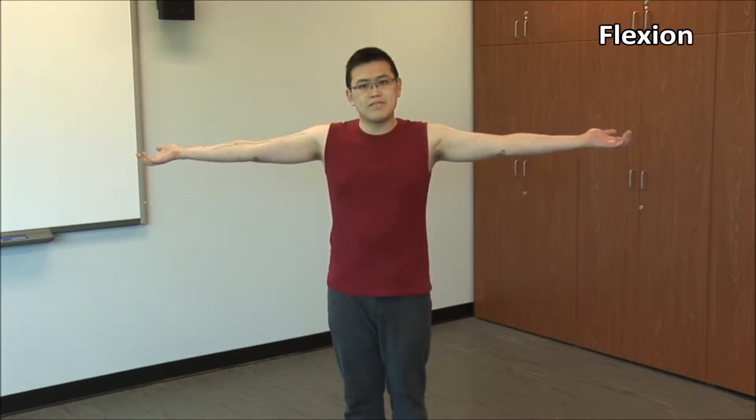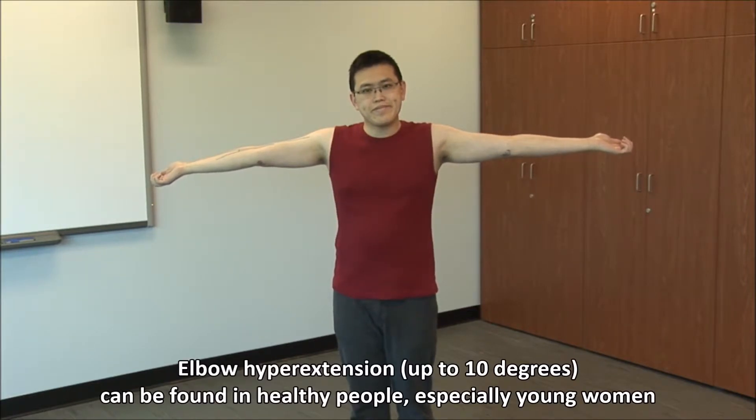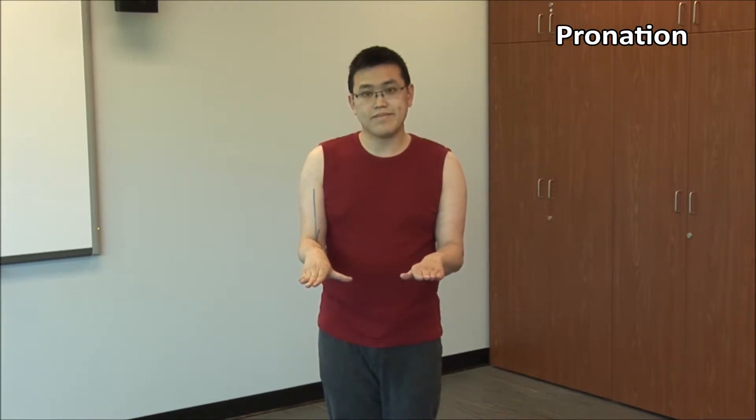Range of movement should be done actively and followed by passive assessment if limitation is detected. Assess flexion — normal is about 140 to 150 degrees. Full extension is defined as 0 degrees, not 180. Some men may lack 5 to 10 degrees of full extension. You may also see hyperextension, especially in women, up to 10 degrees. Flexion and extension occur at the humero-ulnar joint as well as the humero-radial joint. Assess pronation and supination with the elbows at the side flexed to 90 degrees — this avoids introducing shoulder movement. You can use the thumb as a pointer. Have the patient turn the palm down; this is pronation, normally 75 to 90 degrees.